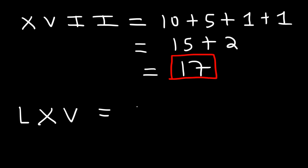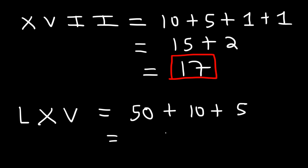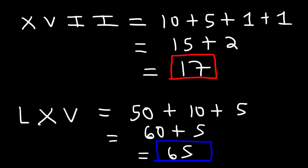For the next example, LXV: L is 50, X is 10, V is 5. So 50 plus 10 is 60, and 60 plus 5 is 65.